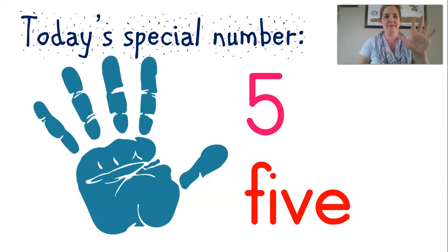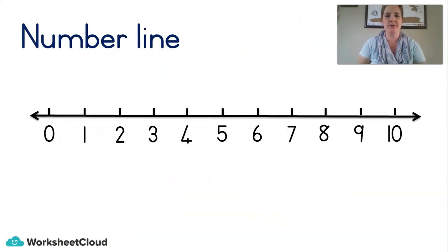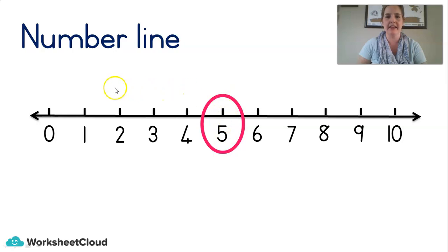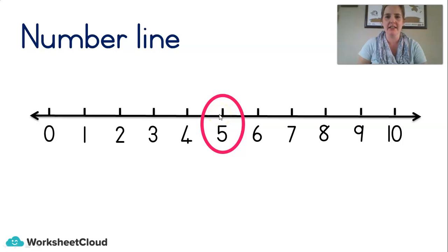Now we are going to find it on this number line. Can you find number five? There it is! It's in the middle of our number line. Let's count how many hops from naught: one, two, three, four, five. That's right!